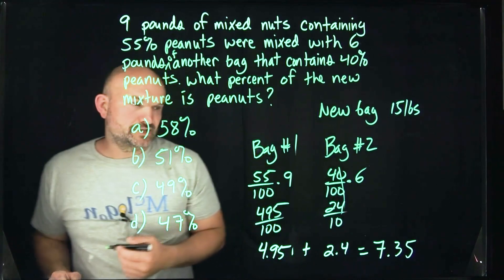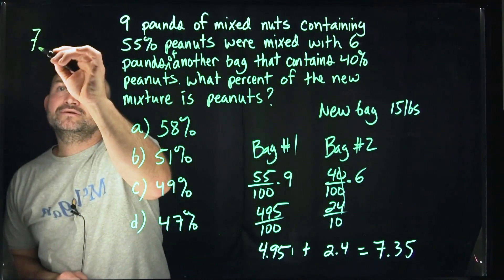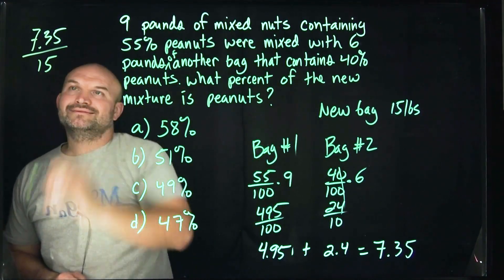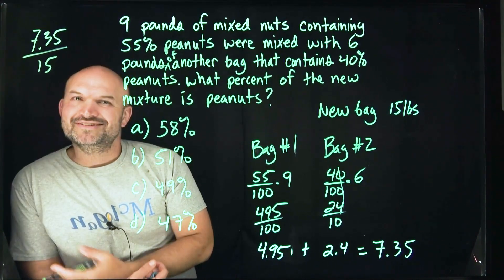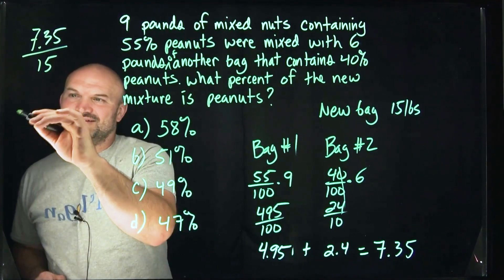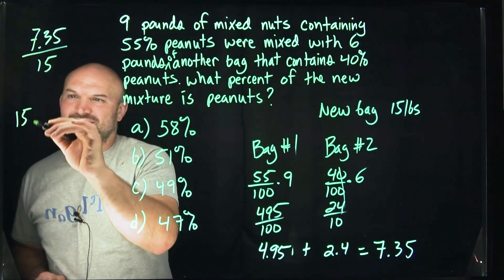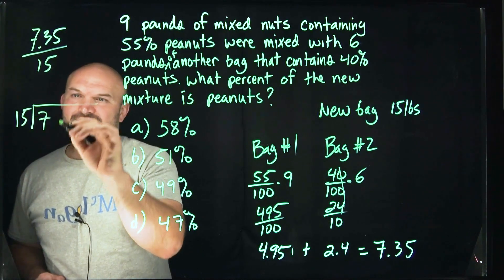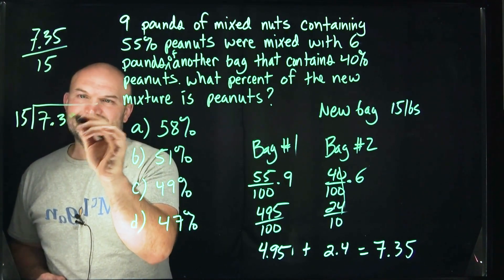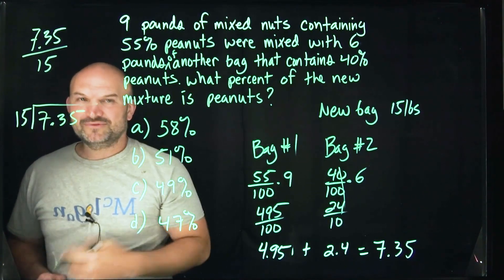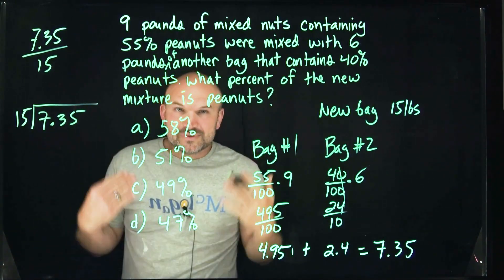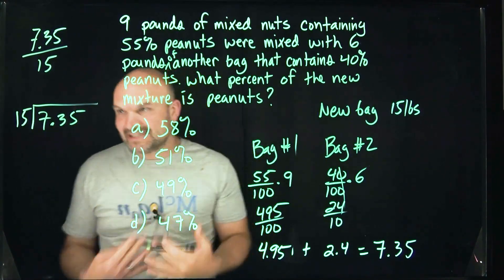So what we need to do is take 7.35 and divide it by 15. How are we going to do that without a calculator? Just use long division. Don't worry — even if you have a test coming up, you can do this. I believe in you.